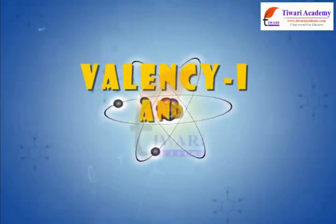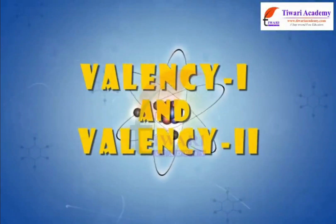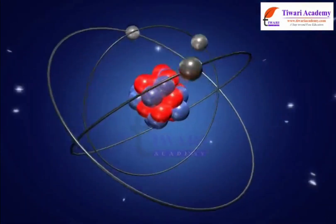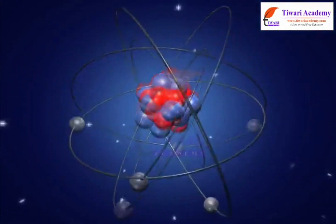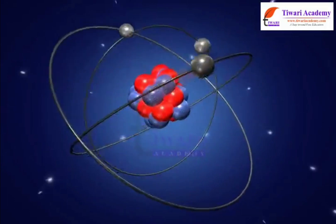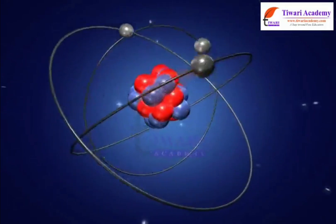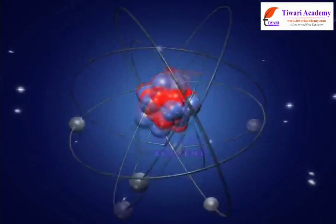Valency Part 1 and Valency Part 2. Dear students, in chemistry, valency or valence number is the number of valence bonds a given atom has formed or can form with one or more other atoms.